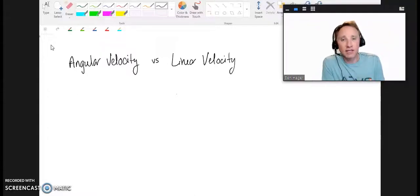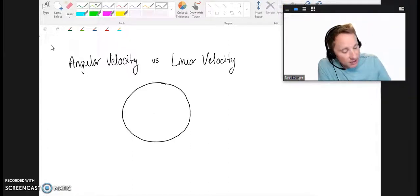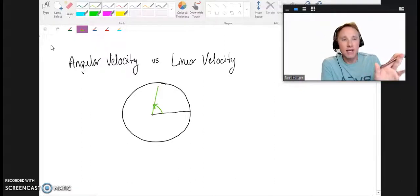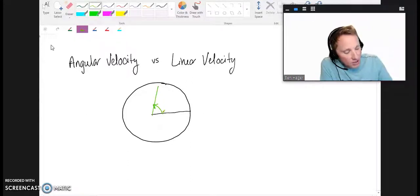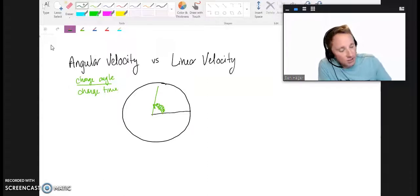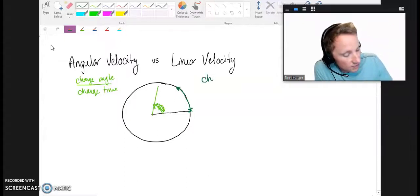Let's first make sure we understand the difference between angular and linear velocity. For both of these, we're talking about circular motion, so something that's moving along a circular path. And basically, angular velocity is taking a look at how much an angle changes with respect to time. So as that green line is turning, we're looking to see how much that angle changes with respect to time. So this is a change in angle over change in time.